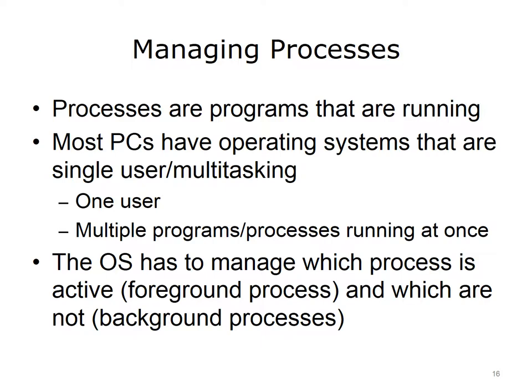If the program or process is not in memory when the user wants to use it, the OS has to load it. Memory is limited in size, and it is possible that not all processes can be contained in memory at once. When this happens, the OS can load only some of the processes at one time and has to switch to other processes when needed. Only a limited number of processes can be active simultaneously. However, even in a single-user setting, it is possible to have multiple processes active at once — for example, a user may be downloading an MP3 file while printing a document and writing an email. The OS has to manage which process is running at a given time, and how these processes share the computer's resources.